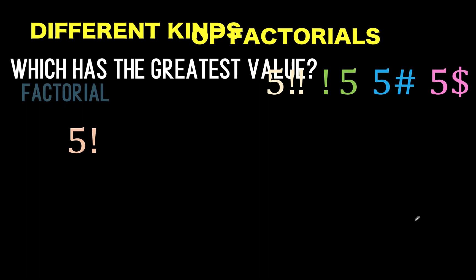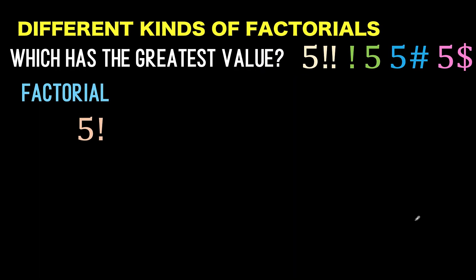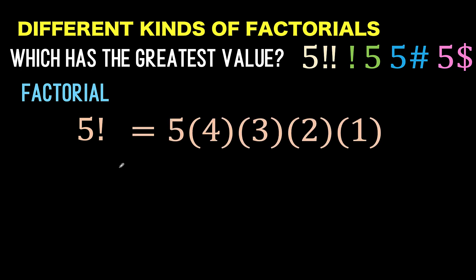Now let's solve this problem together. There are so many different kinds of factorials and 5 of them are in this video. So let's begin with 5 factorial. We know that 5 factorial by definition is equal to 5 times 4 times 3 times 2 times 1.